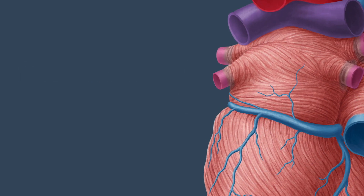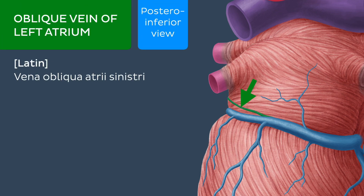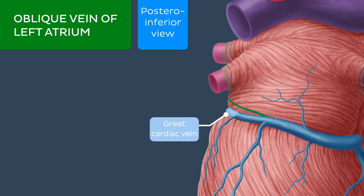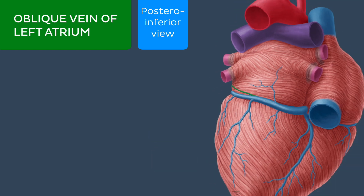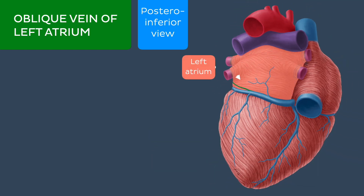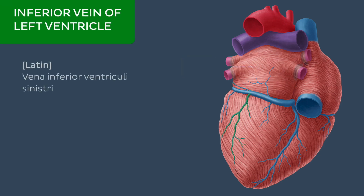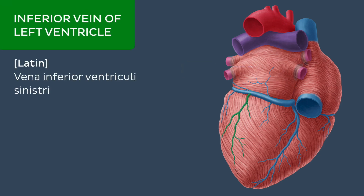It also drains part of the left ventricular myocardium. The vein which joins the great cardiac vein in forming the coronary sinus is the oblique vein of the left atrium. As the name suggests, this vein takes an inferior oblique course along the back of the left atrium to join the great cardiac vein in forming the coronary sinus. This vein drains the left atrium.